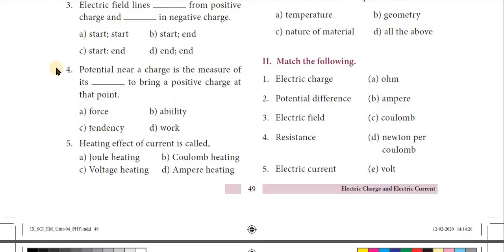Fourth question: potential near a charge is the measure of its dash to bring a positive charge at that point. Option D — work. Potential near a charge is the measure of the work to bring a positive charge at that point.